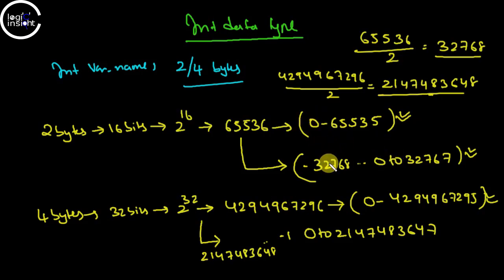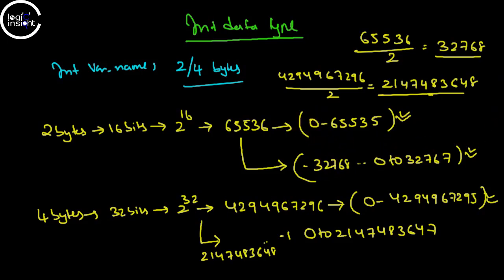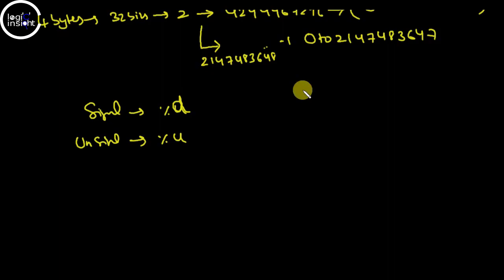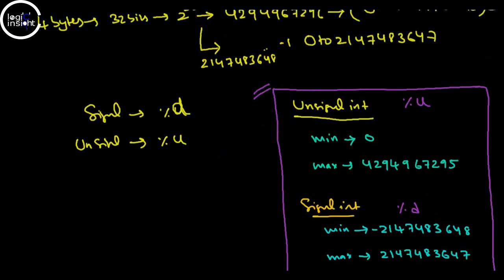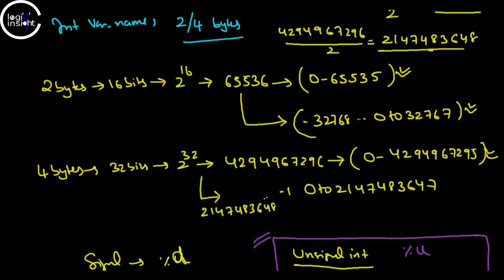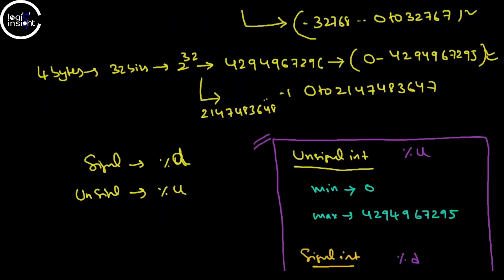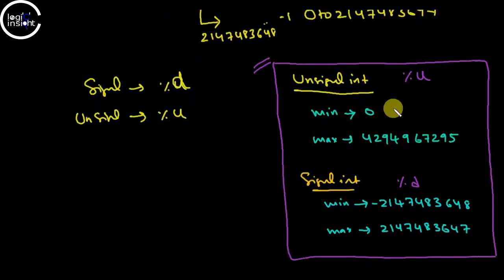For signed values we use '%d' as the format specifier. My machine is on 4 bytes, so I have written all those specifications. I'm going to play with those numbers and see what we observe.